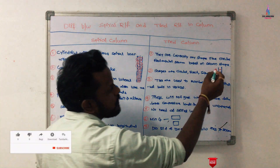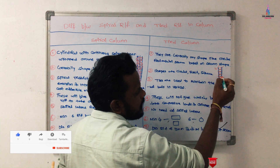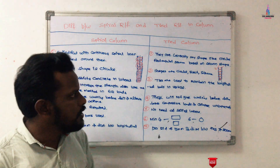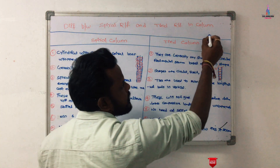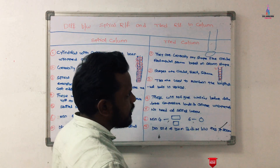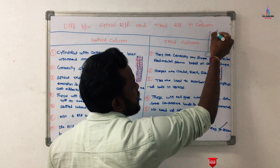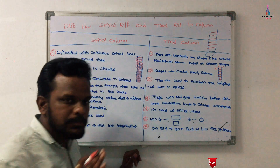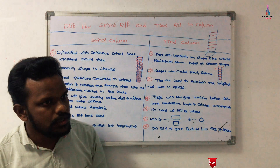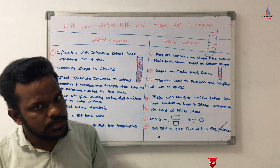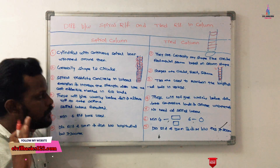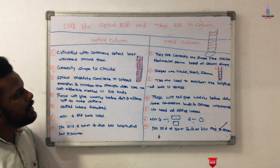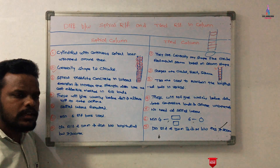In the tie reinforcement column, vertical reinforcement bars have lateral ties provided between them. Tie reinforcement can be used for circular, rectangular, square, or even polygonal cross sections. However, spiral reinforcement is used exclusively for circular column sections. This is the main point: tie reinforcement suits any cross-sectional shape, while spiral reinforcement is limited to circular sections only.